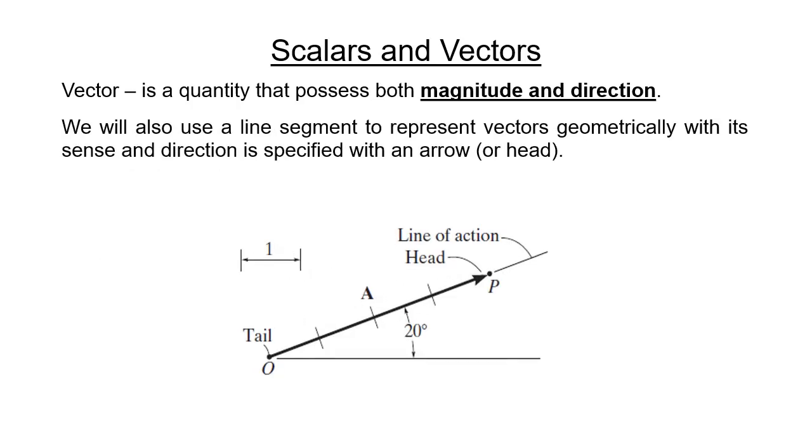We will also use a line segment to represent vectors geometrically, with its sense and direction specified with an arrow or head. Example shows vector A with a magnitude of 4 units directed from point O to point P, measured 20 degrees counterclockwise from the horizontal axis. Take note that the length of the line segment also represents the magnitude of the vector.